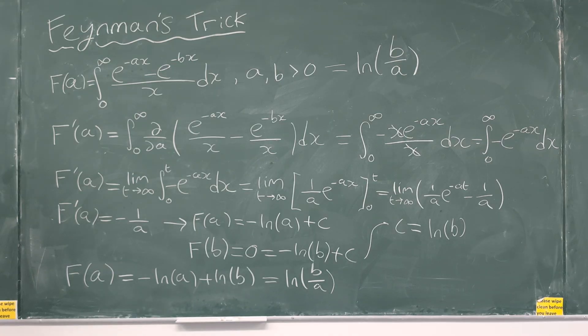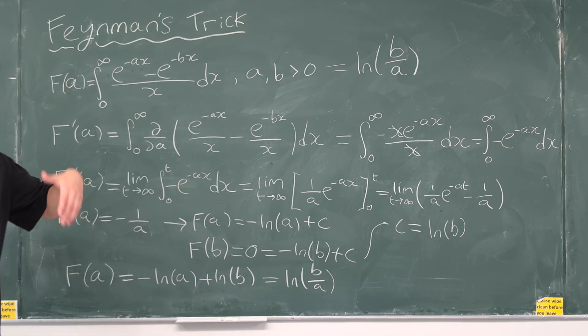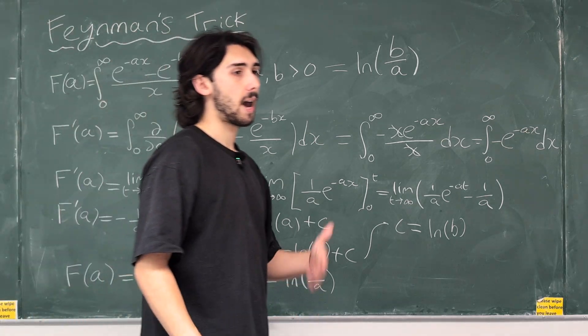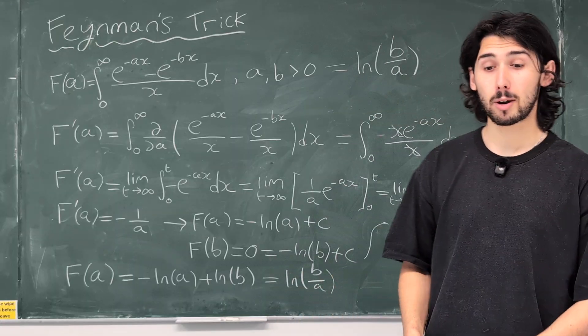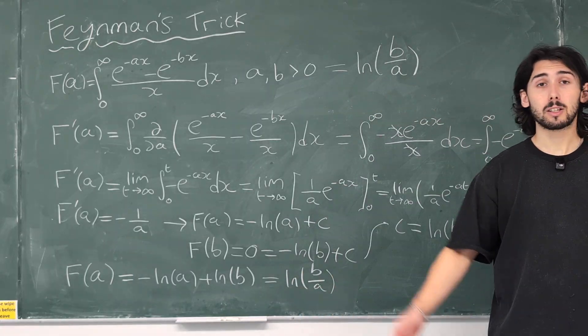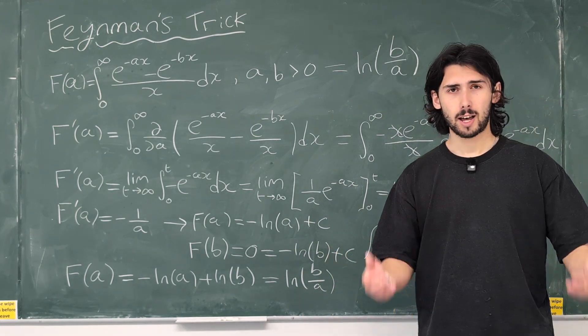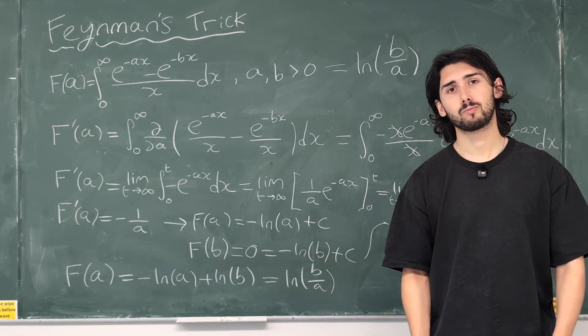And that's it. So, there's another application of Feynman's trick differentiating inside of the integral to then evaluate a simpler integral and then integrate that. Really cool. As always, guys, thank you so much for watching. I highly appreciate it. And I'll see you in the next one. Cheers.